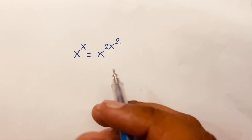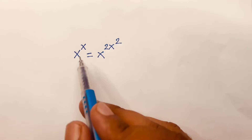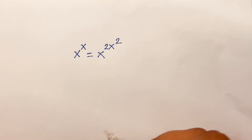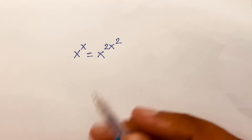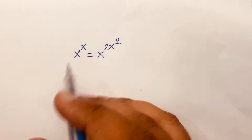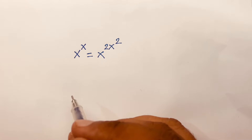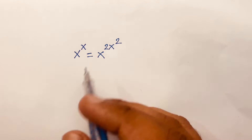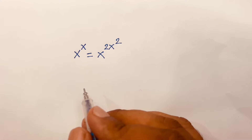How to solve this exponential equation? x to the power x is equal to x to the power 2x squared. We will find out the value of x in this equation.